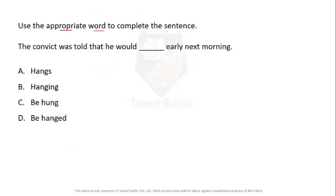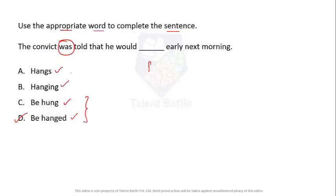Use the appropriate word to complete the sentence: 'The convict was told that he would ___ early next morning.' The answer is option D. Since 'was told' is past tense, we need a past tense form. 'Hangs' and 'hanging' are present tense, so options A and B are cancelled. That leaves options C and D — 'hung' and 'hanged' — both past tense. The answer is D.